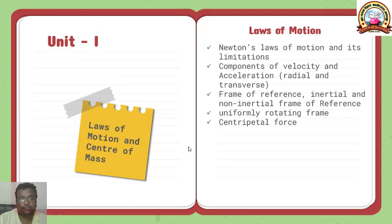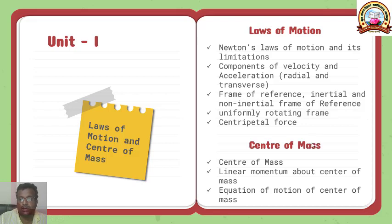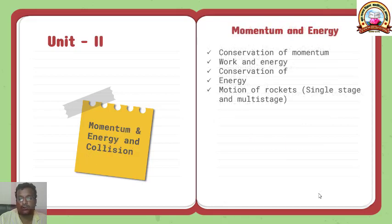In Paper 1, the first unit is divided into two portions. First portion is laws of motion in which we are going to focus on laws of motion and its application, components of velocity and acceleration, specially radial and transverse acceleration. Then we will study frame of reference, inertial and non-inertial frame of reference, uniformly rotating frame and centripetal force. In the next part of the same unit, we will study center of mass, linear momentum about center of mass, and equation of motion of center of mass.